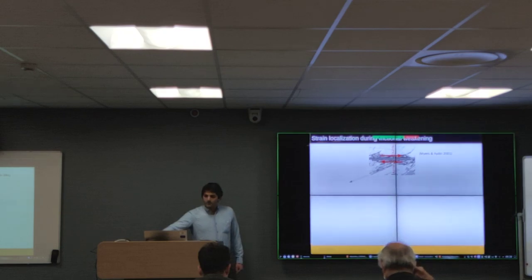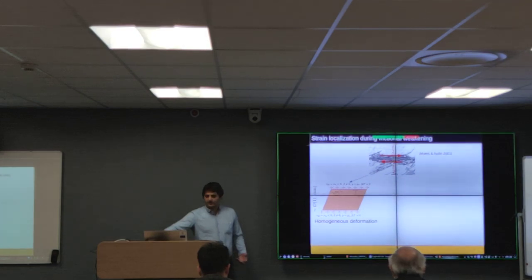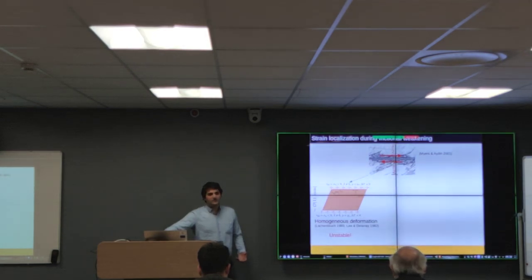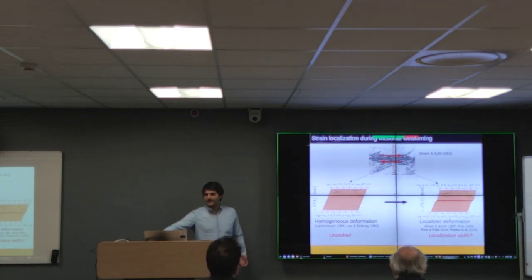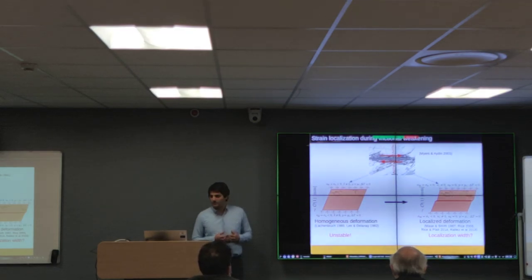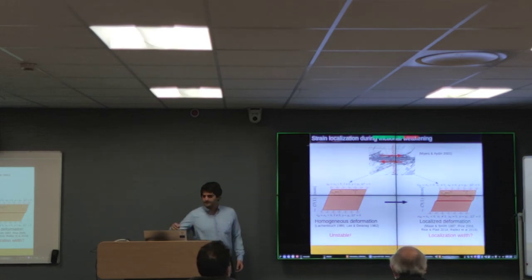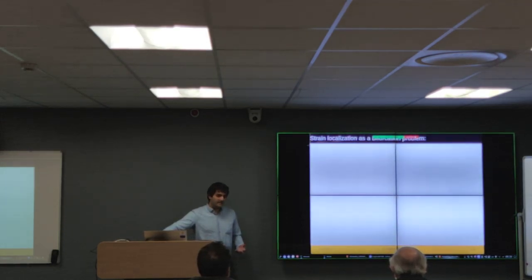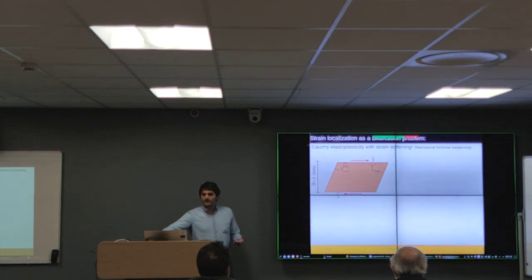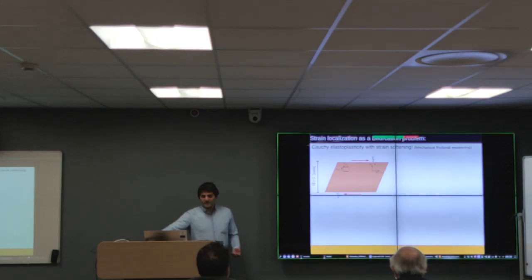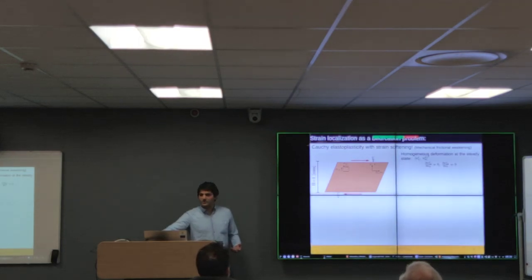For the regularization approaches, it is worth looking at strain localization as a bifurcation problem. During shearing of a fault core, one would assume that initially homogeneous deformation takes place. However, this configuration is shown to be unstable, meaning that a localized form of the slip will occur. We are interested in determining what the localization width is.